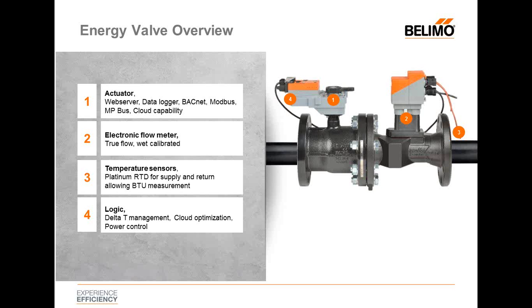We have something called delta T management. What delta T management does is maintain the delta T across the coil — basically getting the coil operating back at the design delta T. System inefficiencies will cause excessive flow rates through a coil, such as not being balanced or pressure-dependent valves overflowing. At a point on the power curve of the coil, the coil will begin to saturate. So with the delta T manager, we begin to modulate the flow rate to get to the appropriate level and get the coil operating back at the design.